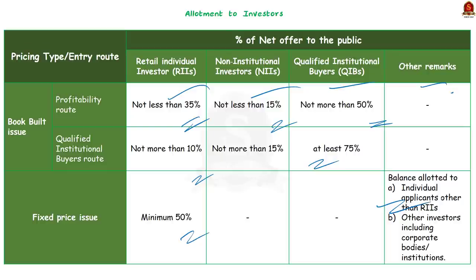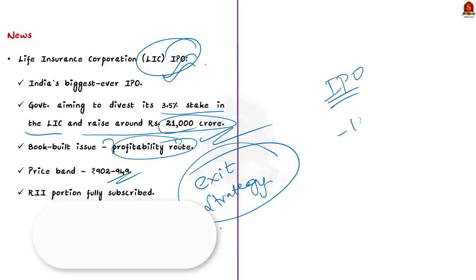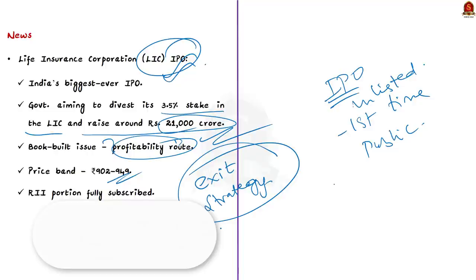So that's all regarding this news article. We saw that an IPO is when an unlisted company makes the issue of shares for sale for the first time to the public. We saw about FPO — the further public offer or follow-on offer — where an already listed company makes a fresh issue or offer of sale. We also saw that SEBI does not play any role in price fixation; the issuer in consultation with the merchant banker on the basis of market demand decides the price.